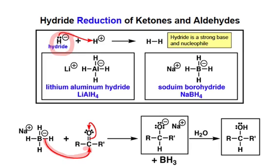After treatment with water to neutralize the alkoxide, the product that results is an alcohol, in which we've added a hydrogen to the former carbonyl carbon. Formally, this is a reduction transformation, because we've transformed the carbon-oxygen multiple bond into two sigma bonds to hydrogens.